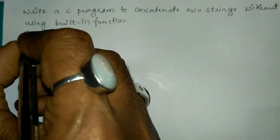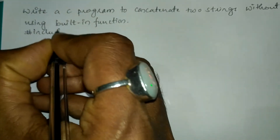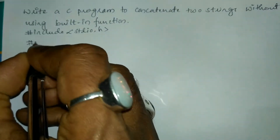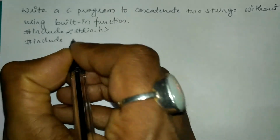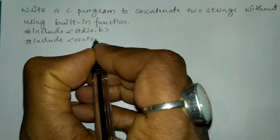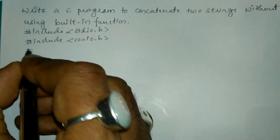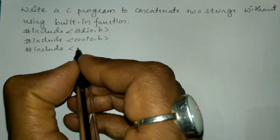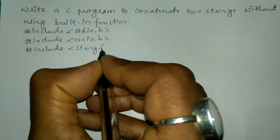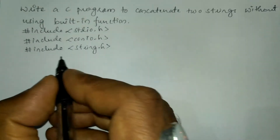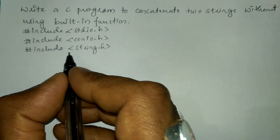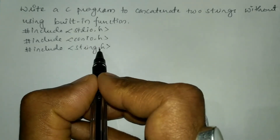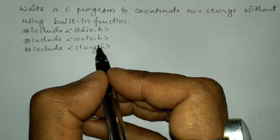Let us write the preprocessor directives. Hash include in angular brace we'll write standard input output dot h header file. The next preprocessor directive is hash include console input output dot h header file, and we'll include one more: hash include string dot h, because we are using some inbuilt functions present in string dot h header file other than concatenation of two strings.